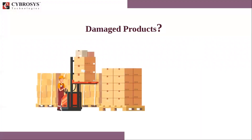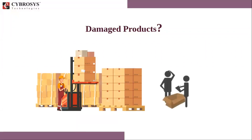In the company stockroom, you once in a while discover items that are unusable because of expiring or for some other reason. You regularly see this during physical stock, and since you can't sell or store these items, you need to scrap them. In Odoo 15, there is a scrap management technique in the inventory management module.